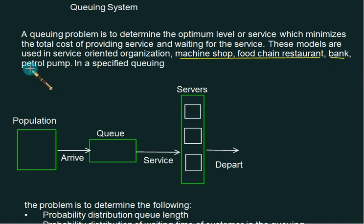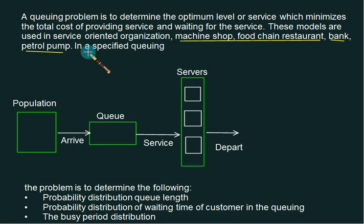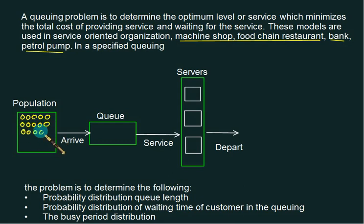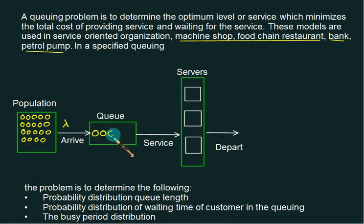Why are we interested in the queue forming? Because to satisfy your customer the queue formed should be as short as possible. For that purpose you have to provide the servers and the service will be very fast. The customer who wish to take the service arrive to our waiting line system at the arrival rate of lambda and they form the queue to get the service.